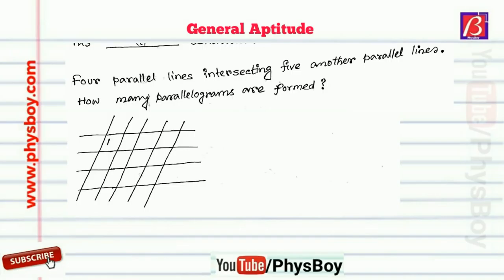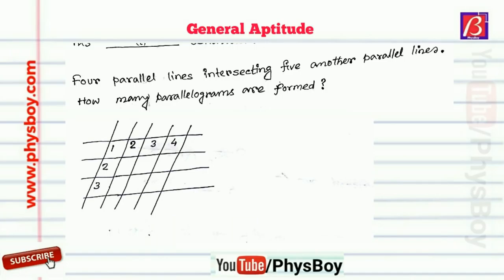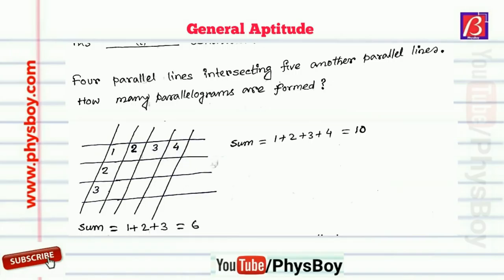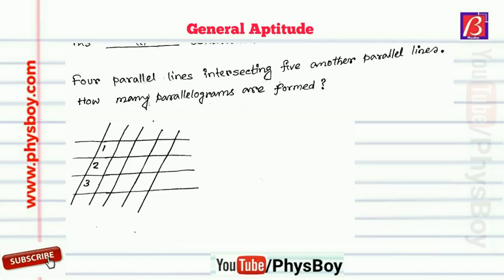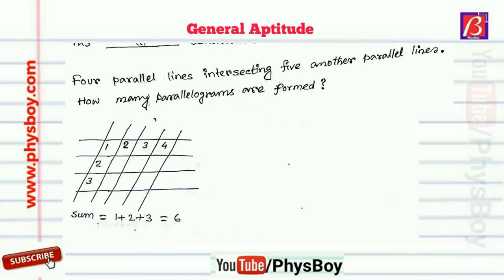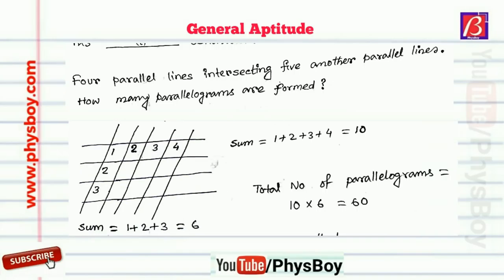You can solve this question using a simple trick. First, number each of the simple parallelograms horizontally as shown in the figure — the sum of these numbers is 10. Similarly, number each vertically; the sum is 6. So the total number of parallelograms will be 10 cross 6, which equals 60. So 60 is the correct answer.